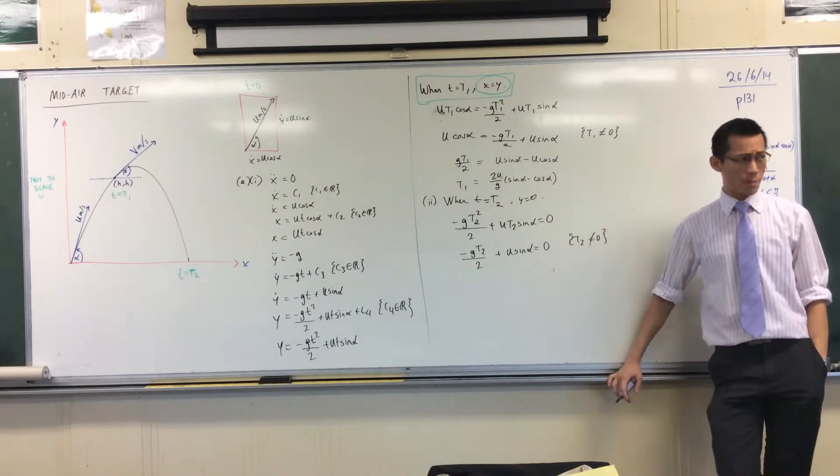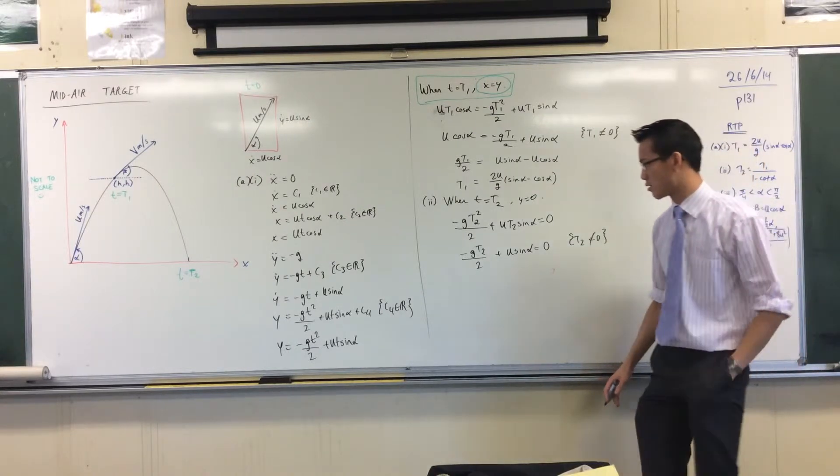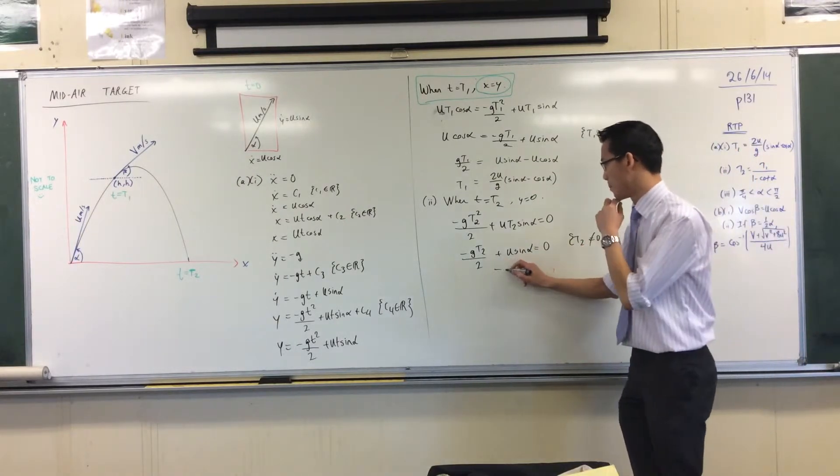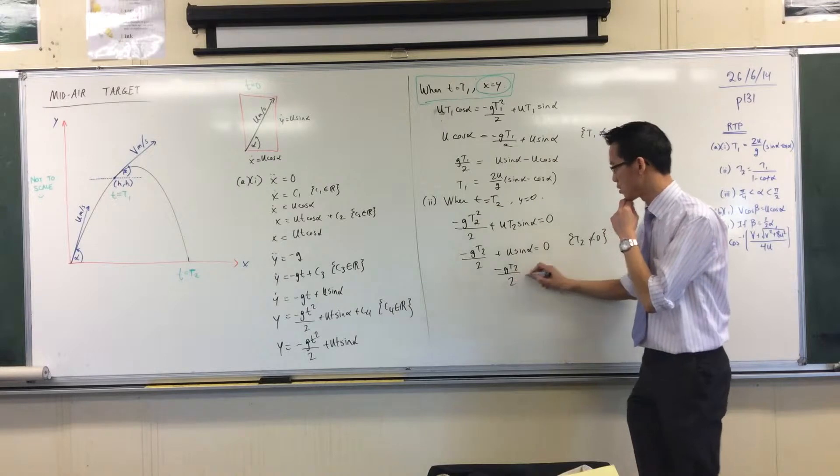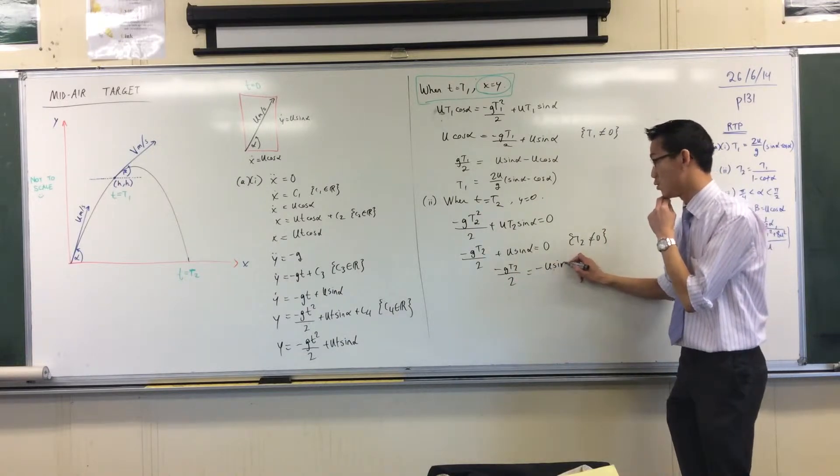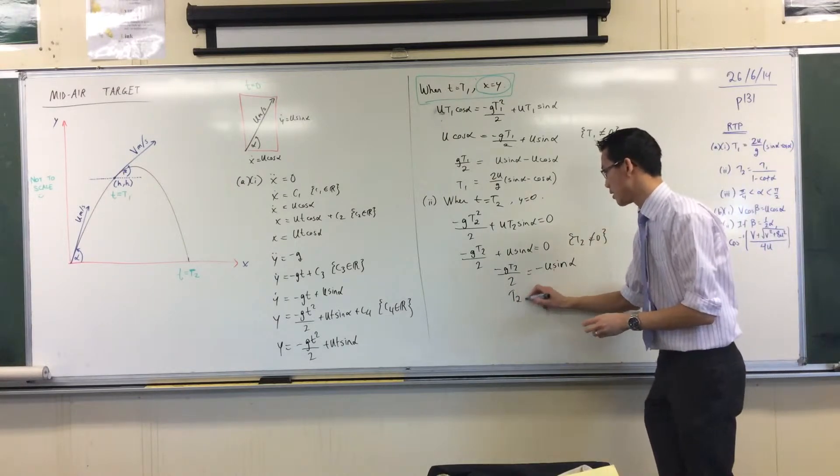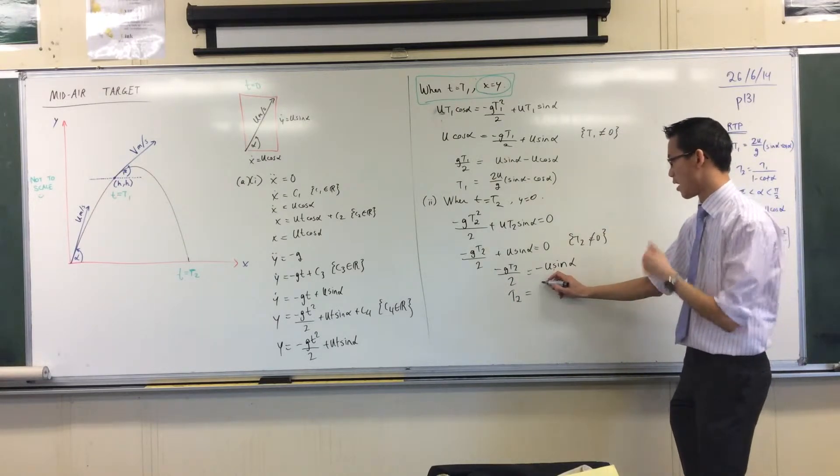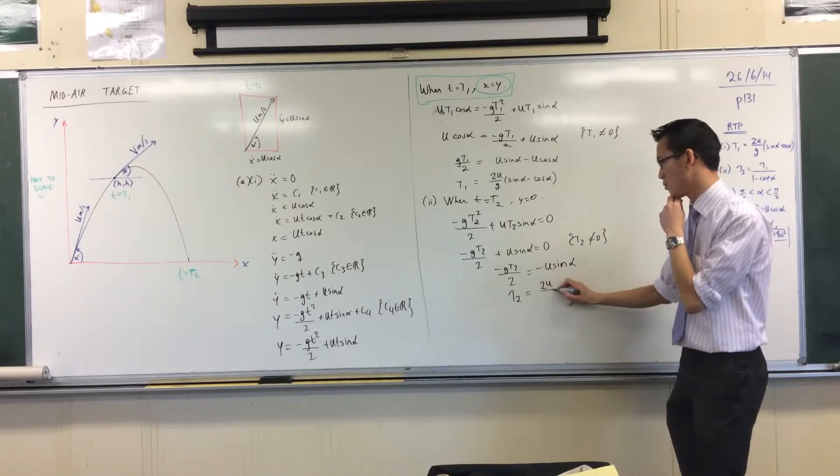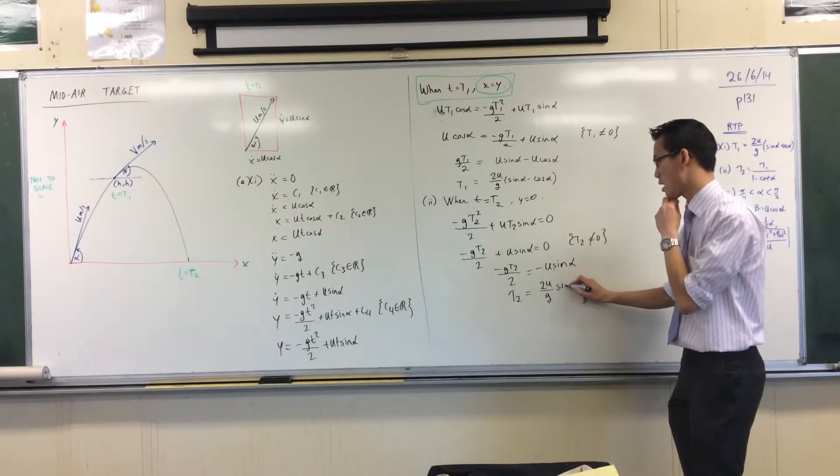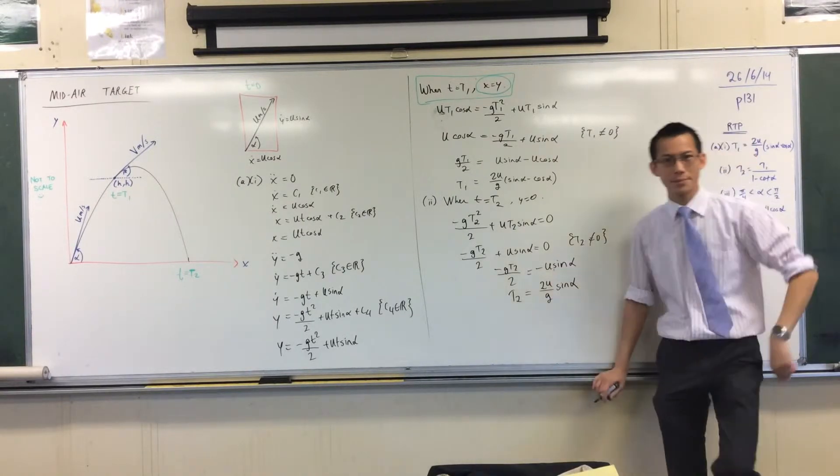Now, what was I supposed to do? I was supposed to solve for T2, wasn't I? So let's rearrange this guy. Kick this U sine alpha over to the other side, divide through by everything, and you end up with this. What have I got? Two U on G, sine alpha, got it right that time.